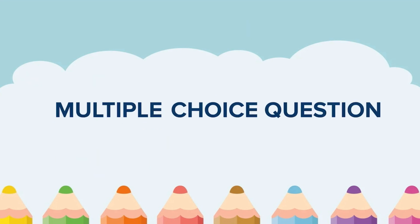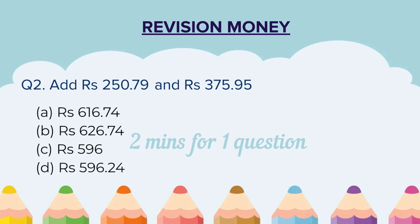Now the second category of questions is multiple choice questions, or MCQ questions. Here, with the question you will be given 4 possible answers and you have to choose the correct one. Question 2: Add rupees 250.79 and rupees 375.95. You will add these two numbers and then select the correct answer out of the 4 given options.